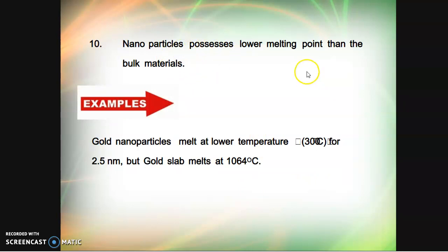Nanoparticles possess lower melting point than bulk materials. For example, gold's melting temperature is 1064°C, whereas if it is made in nano size like 2.5 nanometers, it has a melting point of 300°C. So the melting point decreases if it is converted into nano size.